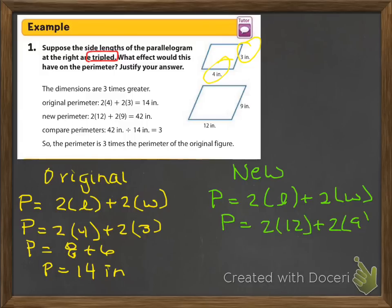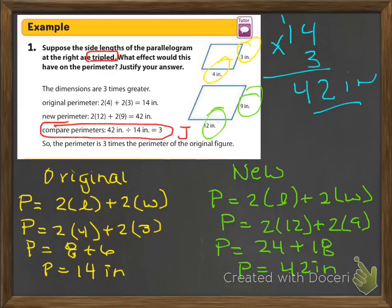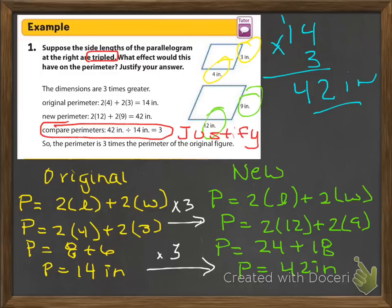For the new perimeter, the sides are tripled: 9 and 12. Plug them in: two times twelve plus two times nine gives twenty-four plus eighteen, which is forty-two inches. Now justify it: multiply the original perimeter of fourteen by three — because you tripled all side lengths — and you get forty-two inches. The relationship between the two perimeters is multiplied by three. Write the justification: forty-two divided by fourteen equals three, so the perimeter is three times the perimeter of the original figure.